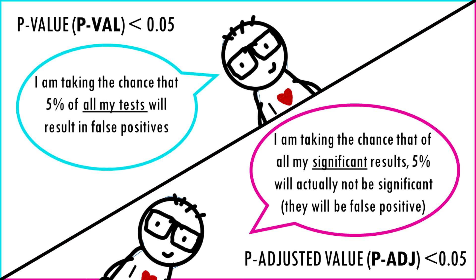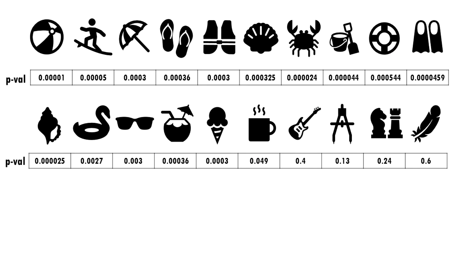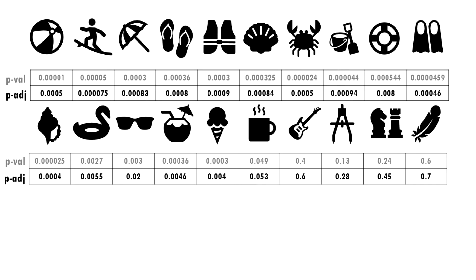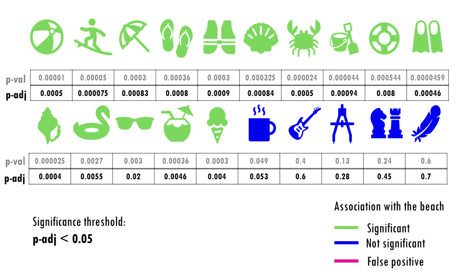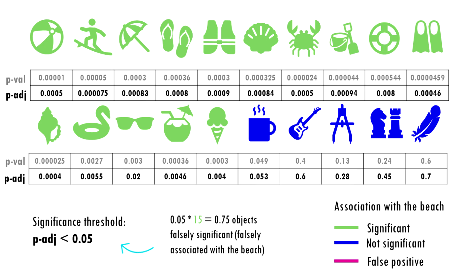So as a recap: a p-value of 0.05 means that 5% of all tests will result in false positives, more or less. A p-adjusted value of 0.05 means that 5% of significant results will result in false positives. Let's go back to our example. Up to now we were just talking about p-values. Now we will get our q-values, or p-adjusted values, and if we go with a q-value threshold of 0.05, it means we are willing to accept 0.75 — so less than one object — that's classified as a beach object when it is not. So basically, a false positive.